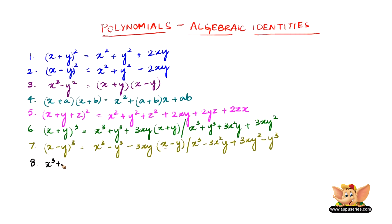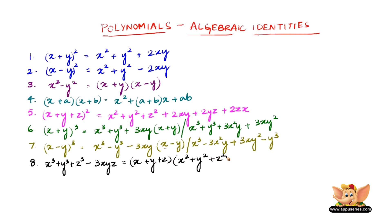The 8th identity is x cube plus y cube plus z cube minus 3xyz equals (x + y + z) into (x squared plus y squared plus z squared minus xy minus yz minus zx). These are the 8 algebraic identities which are important to solve problems.